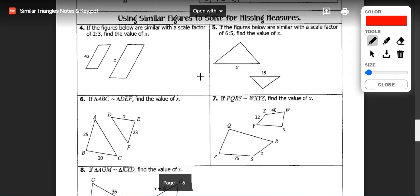Now let's look at how to apply similar figures to solve for missing measures. In the figures below we have two similar figures that have a scale factor of two-thirds and we're trying to find the value of X. We're going to set up a proportion and we know that two-thirds is the scale factor.